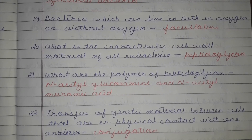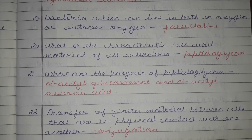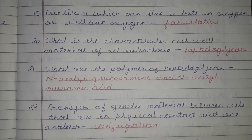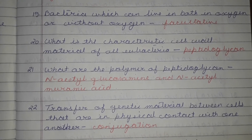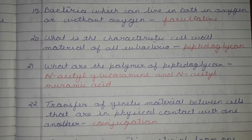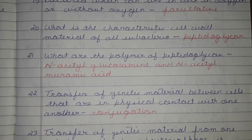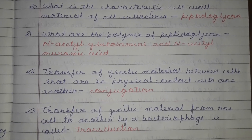What is the characteristic cell wall material of all Eubacteria? It is peptidoglycan. What are the polymers of peptidoglycan called? They are N-acetylglucosamine and N-acetylmuramic acid.